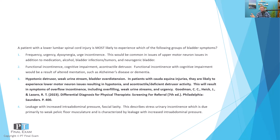Looking at the other answer options: frequency, urgency, dyssynergia, and urge incontinence would indicate a neurogenic bladder — often upper motor neuron disorders, medications, alcohol, or bladder infections — all leading to a hyperactive bladder and sudden urges where the detrusor contracts and you must void immediately. Functional incontinence is related to some type of cognitive or physical impairment preventing you from getting to the bathroom in time — most commonly Alzheimer's disease or dementia, where severe impairment alters mentation.